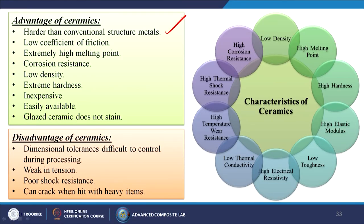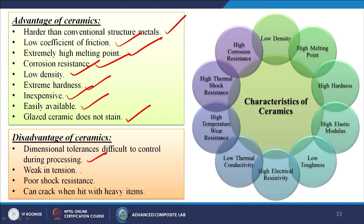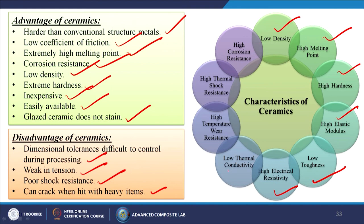Advantages of ceramics include: harder than conventional structural metals, low coefficient of friction, extremely high melting point, corrosion resistance, low density, extreme hardness, inexpensive, easily available, and glass ceramics do not stain. Disadvantages include: dimensional tolerances difficult to control during processing, weak in tension, poor shock resistance, and tendency to crack when hit with heavy items due to brittleness. Key characteristics: low density, high melting point, high hardness, high elastic modulus, low toughness, high electrical resistivity, low thermal conductivity, high temperature wear resistance, high thermal shock resistance, and high corrosion resistance.